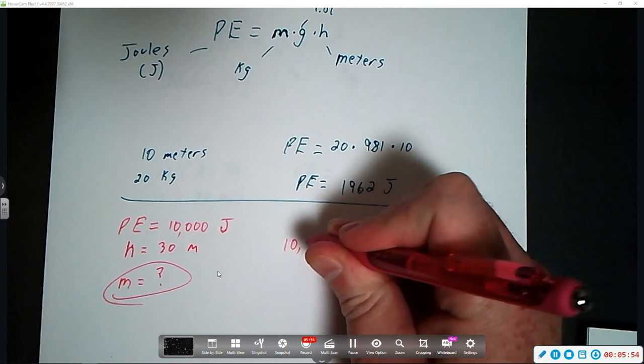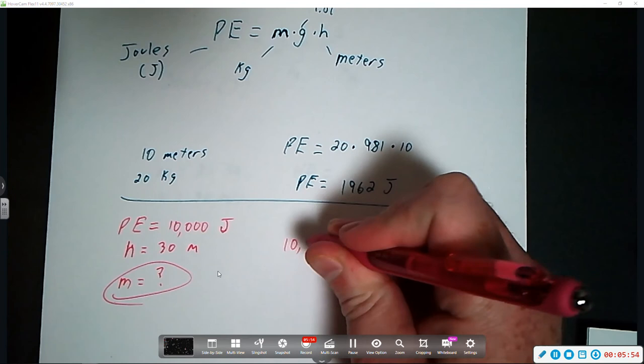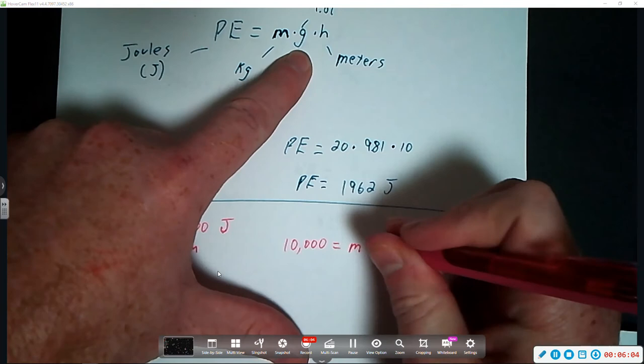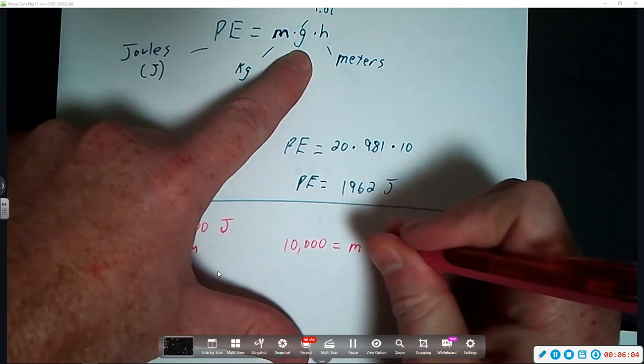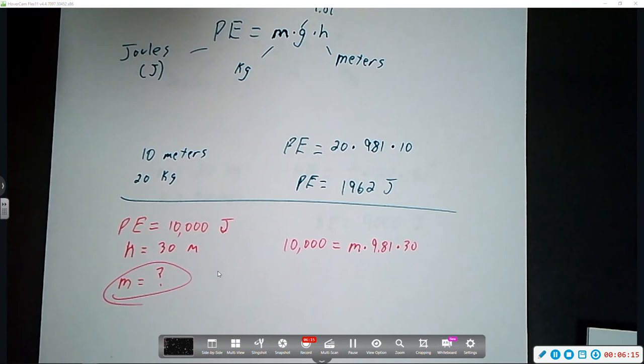Potential energy, we know that is 10,000 is equal to the mass. We don't know that, so we're going to use a variable m. Times gravity, 9.81, times height, which we said was 30 meters.